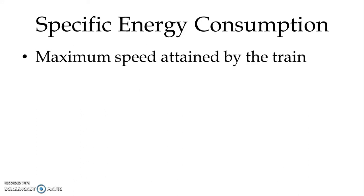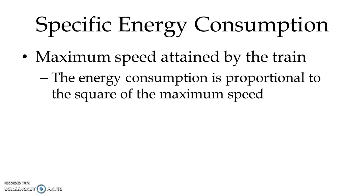The third factor is the maximum speed attained by the train. The energy consumption is proportional to the square of the maximum speed. So for each locomotive, we have to identify a maximum speed which provides the minimum specific energy consumption requirement.